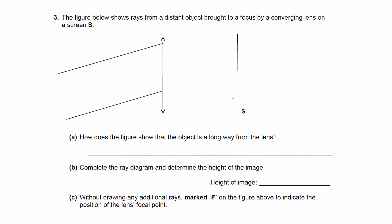This question shows a ray from a distant object brought to a focus by the converging lens on the screen S. The word 'distant' indicates that the object is at infinity. The word 'focus' means that the image falls on the screen. The figure shows that the object is a long way from the lens because the incident light rays are parallel to each other. Complete the ray diagram to determine the height of the image. Since the image is at screen S, you make use of the three light rays, but in this case there is actually just one light ray you can use — the one through the center of the lens.